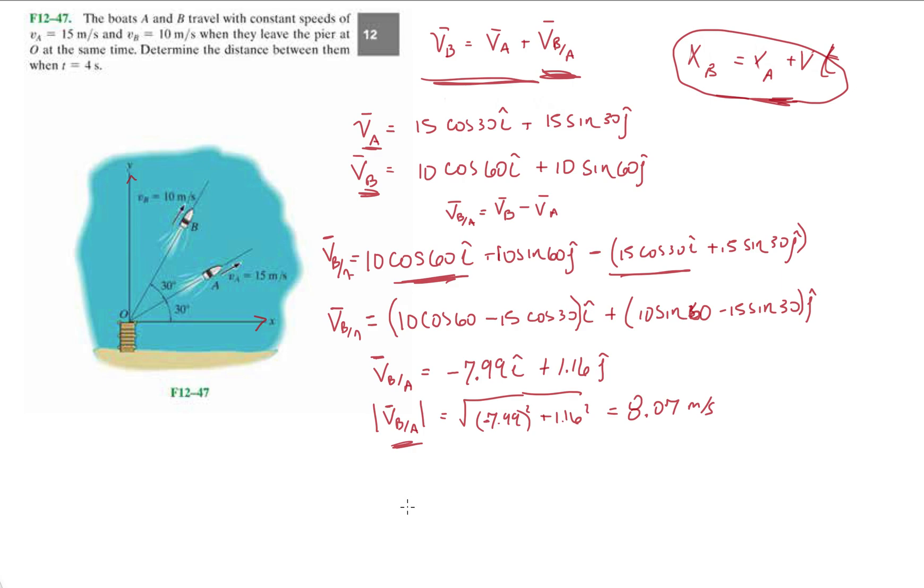But if you have a changing acceleration you need to use derivatives or integrals. So let's do: distance between B with respect to A is equal to v_B with respect to A times t. So that's 8.07 times 4. You should get approximately 32.3 meters.